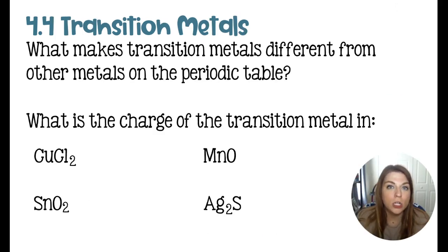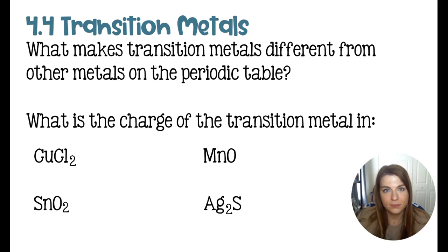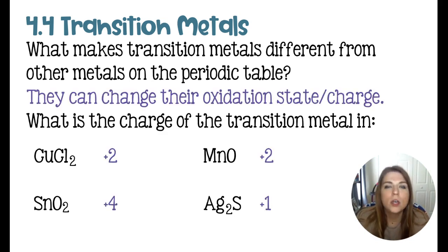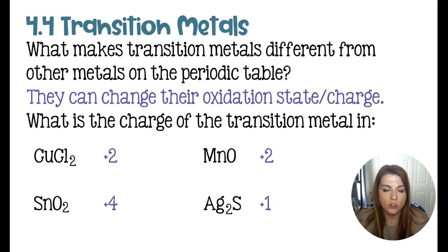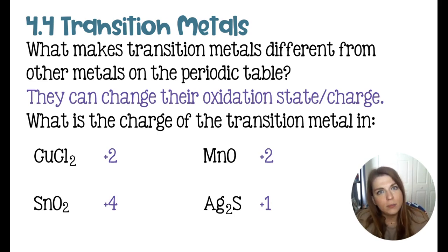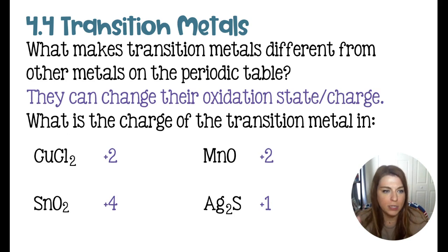For these compounds, you should uncrisscross to figure out what the original charge of the transition metal was before it bonded. Transition metals are different because they can change their oxidation states — they rearrange their internal electrons to change the number of valence electrons so they can bond with different charges. Copper, for example, is sometimes plus one and other times plus two, so you have to uncrisscross to figure out exactly which version is bonding.